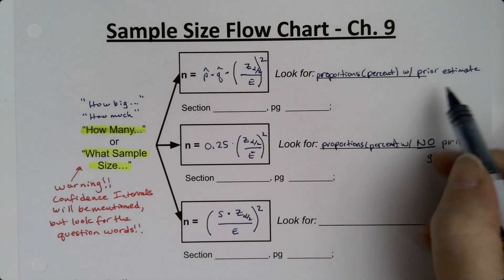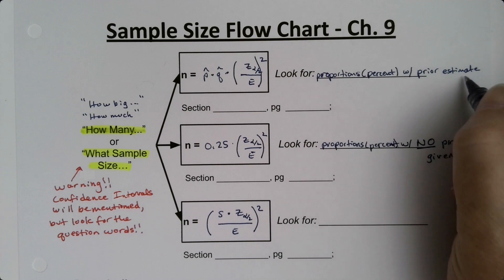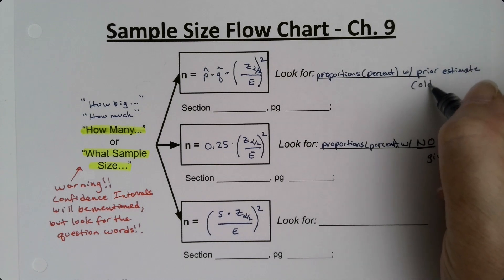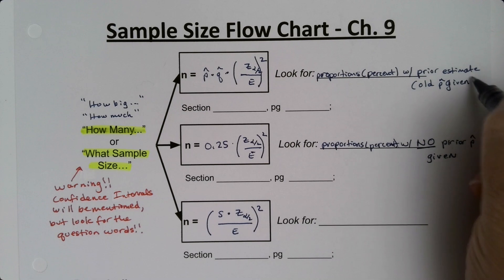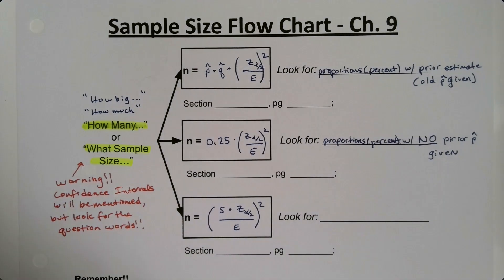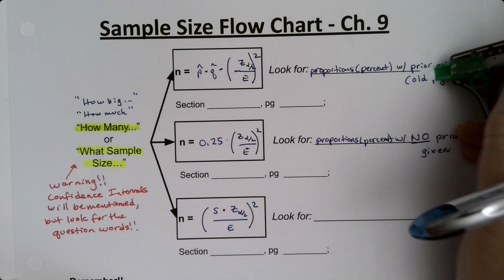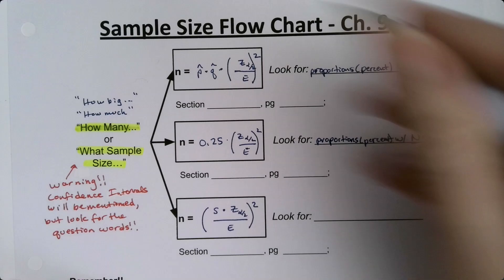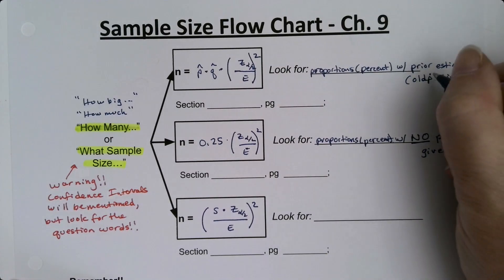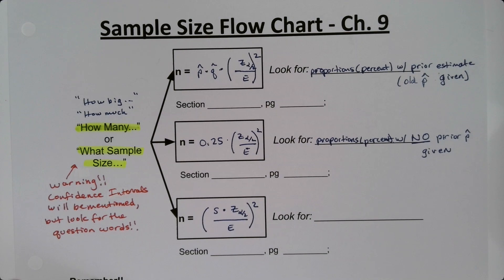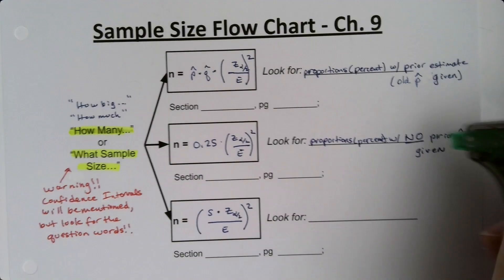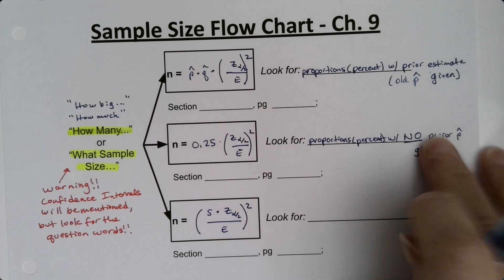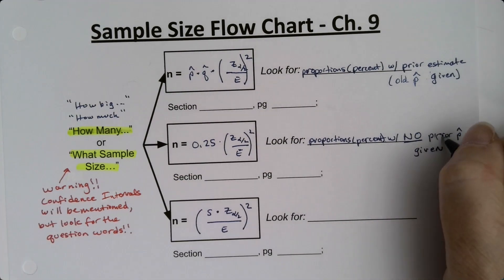The way we say it is 'prior estimate,' meaning in the past. In other words, there will be an old p-hat given in the problem. So if there's an old p-hat given in the problem, that's the 'prior' — no prior means no old p-hat given.